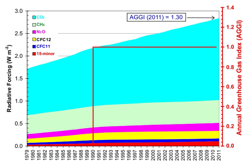A greenhouse gas is a gas that absorbs and emits radiant energy within the thermal infrared range. Greenhouse gases cause the greenhouse effect. The primary greenhouse gases in Earth's atmosphere are water vapor, carbon dioxide, methane, nitrous oxide, and ozone.